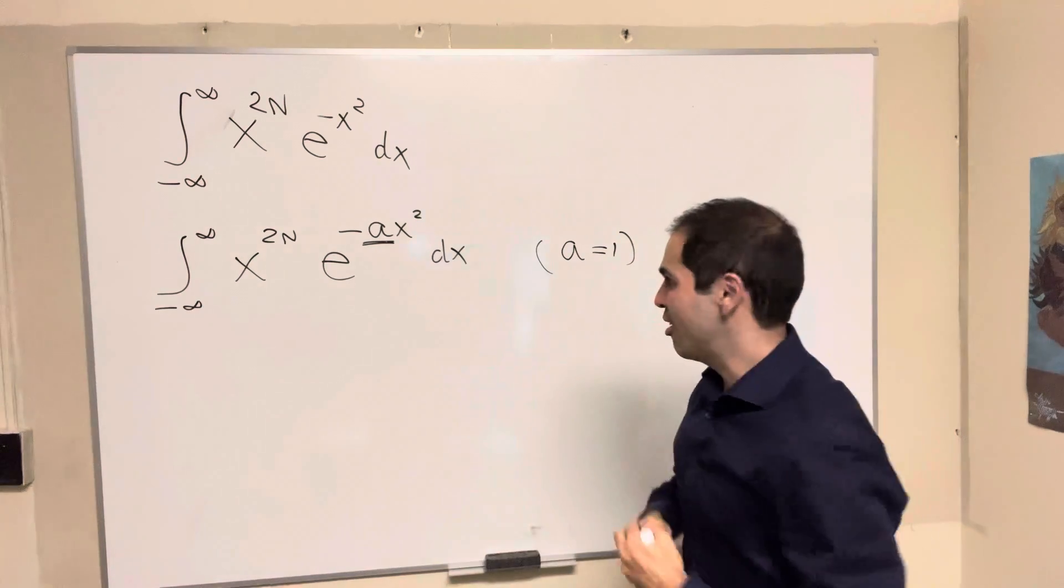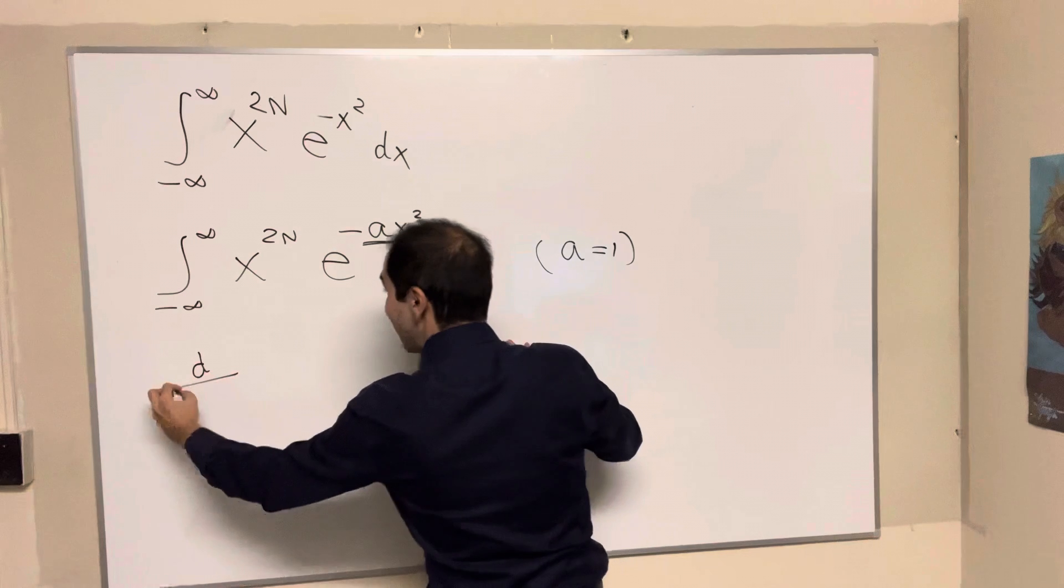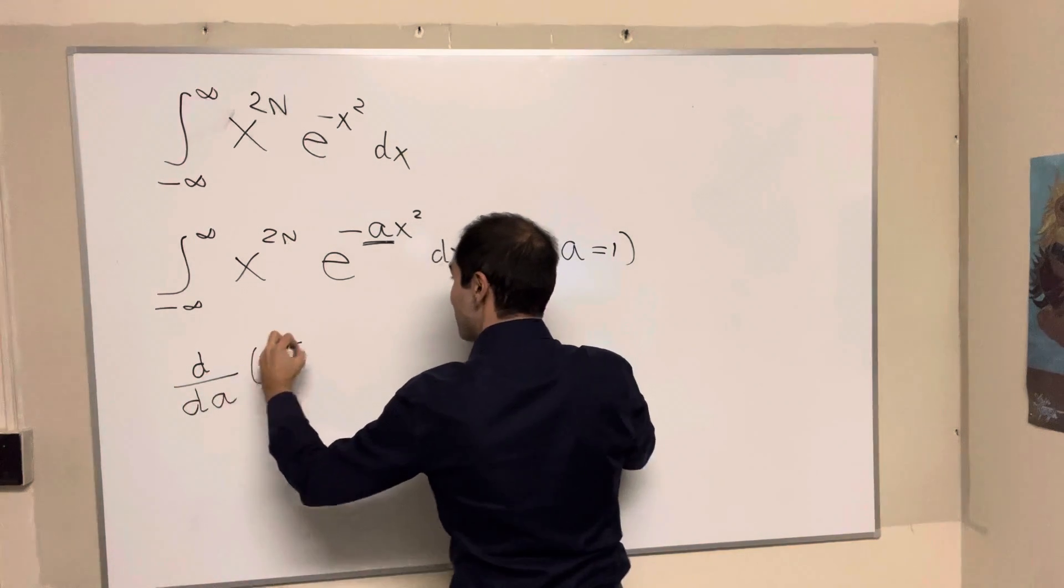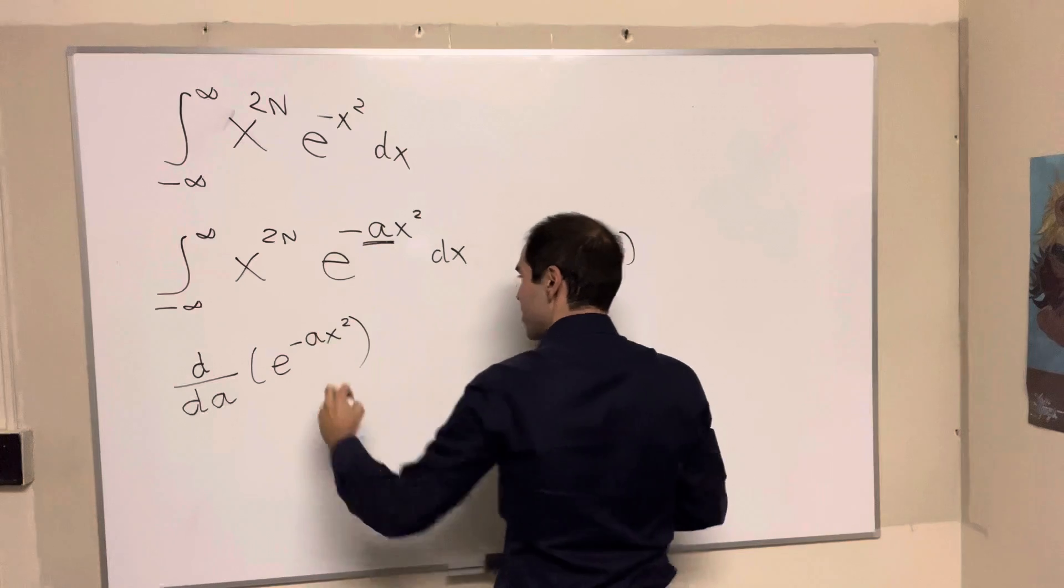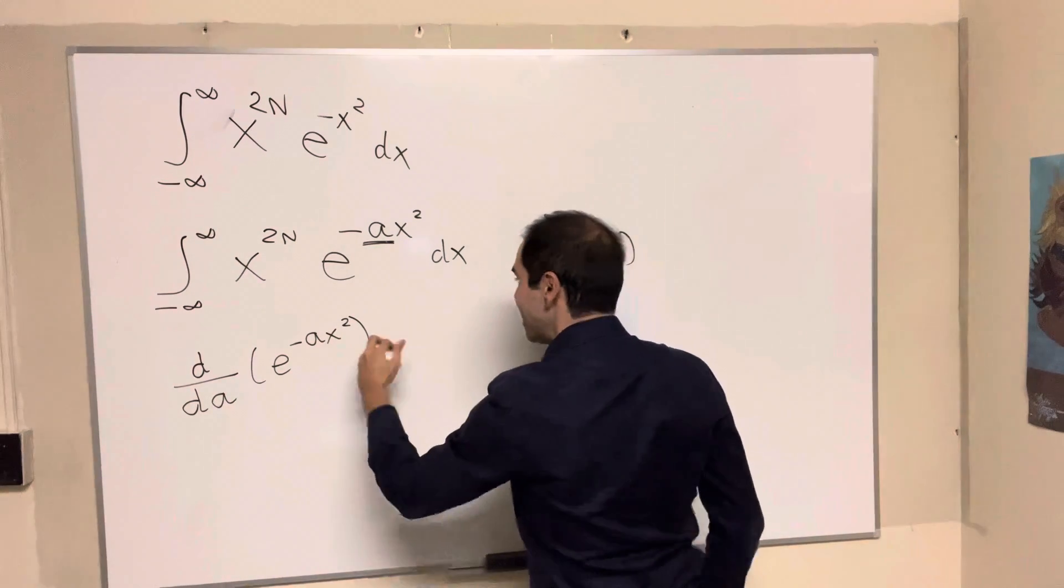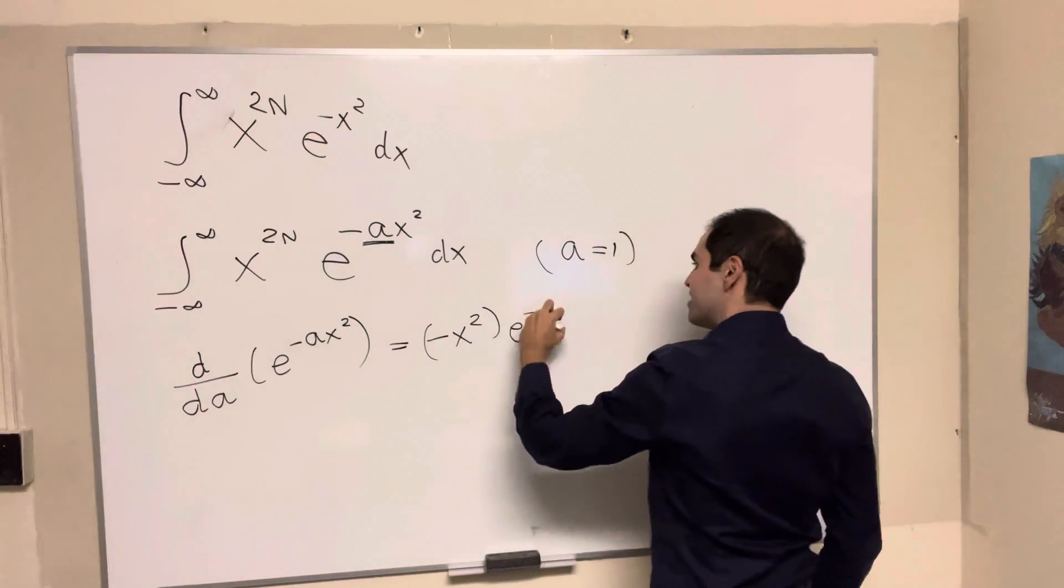Now, to evaluate this, it's useful to notice the following pattern. So take e of minus a x squared and differentiate this with respect to a. Then using the chain rule, we get minus x squared times e of minus a x squared.